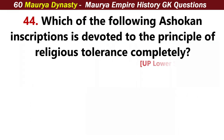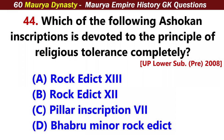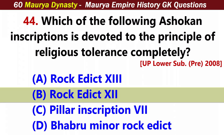Which of the following Ashokan inscriptions is devoted entirely to the principle of religious tolerance? Answer B: Rock Edict 12.